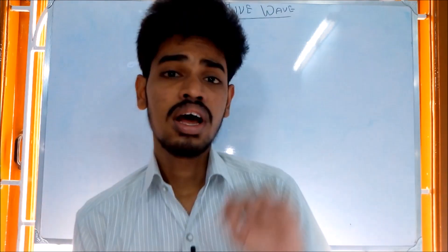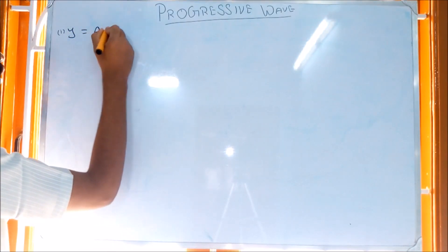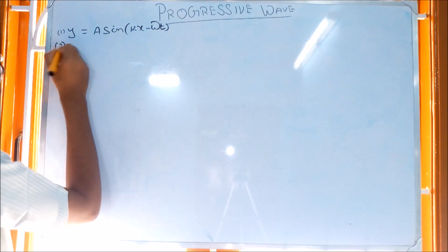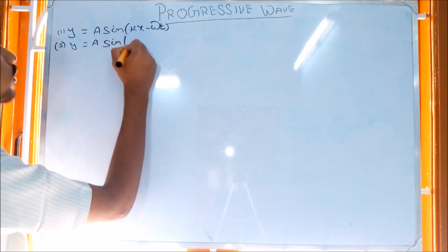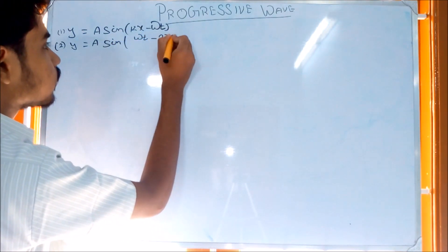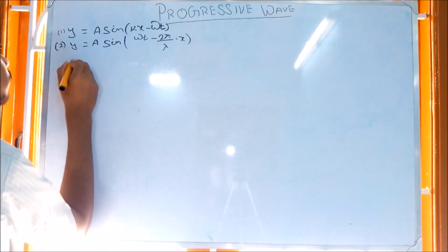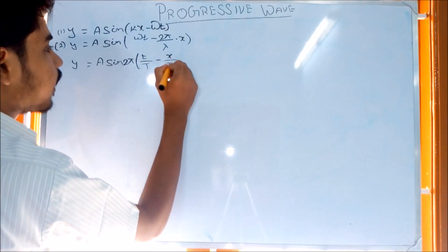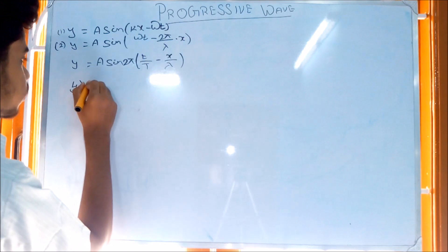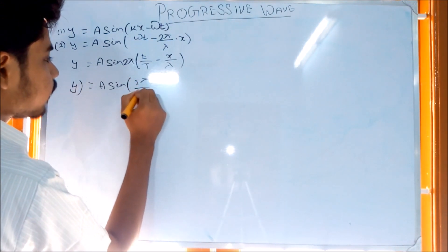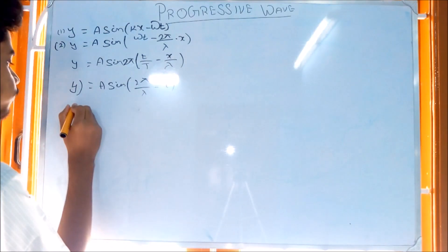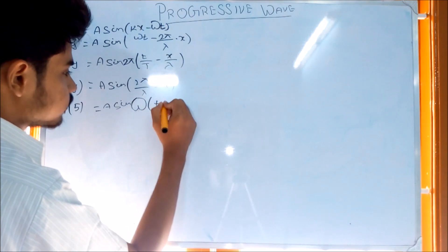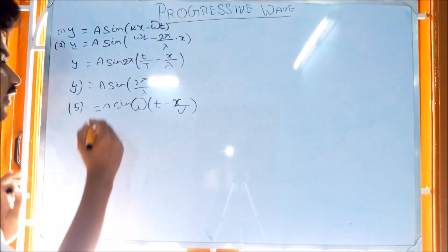The five standard forms of the progressive wave equation are: first, y = a sin(kx − ωt); second, y = a sin(ωt − 2π/λ · x); third, y = a sin(2π(t/T − x/λ)); fourth, y = a sin(2π/λ · (vt − x)); fifth, y = a sin(ωt − x/v).